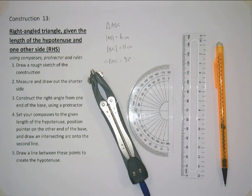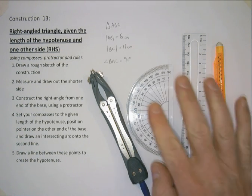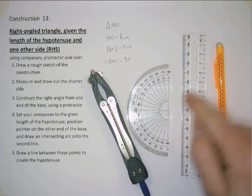Construction 13. Drawing a right-angled triangle given the length of the hypotenuse and one of the other sides. For this you need compasses, protractor, ruler, and pencil.